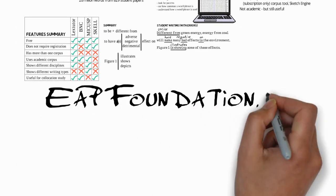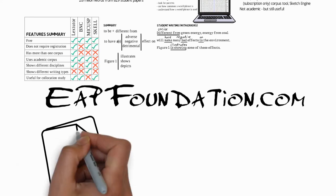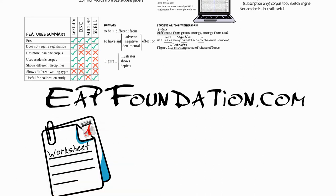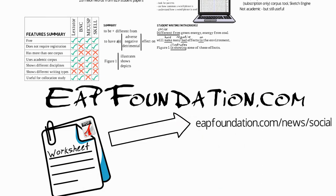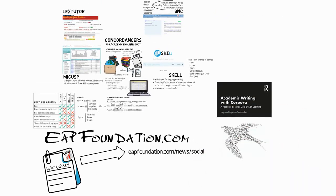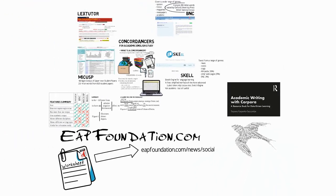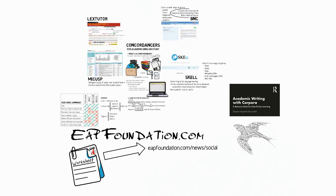For more information on concordances and other aspects of academic English, please visit eapfoundation.com. As well as more detailed information about concordances, you can find a worksheet for use with this video and others on the channel — visit eapfoundation.com/news/social. If you're interested in exploring corpora in more detail to improve academic writing, there's a great book on this topic called 'Academic Writing with Corpora: a resource book for data-driven learning', written by Tatjana Karpenko-Seekham and published by Routledge. You can find a link in the description below, and there's also a review of the book on the eapfoundation.com website.